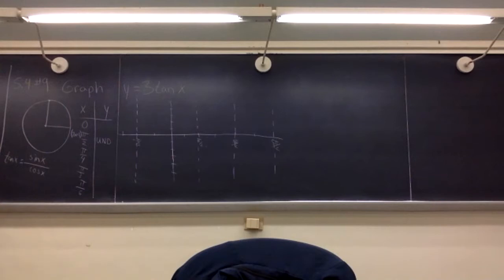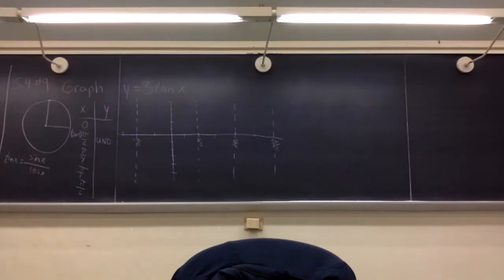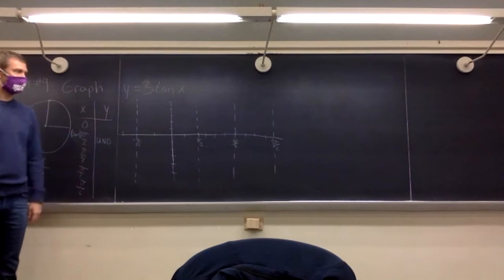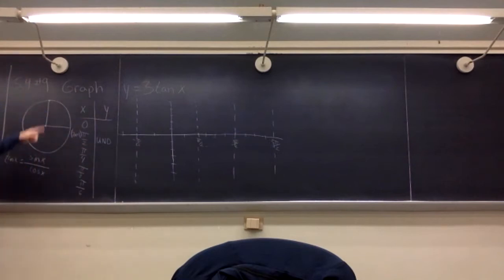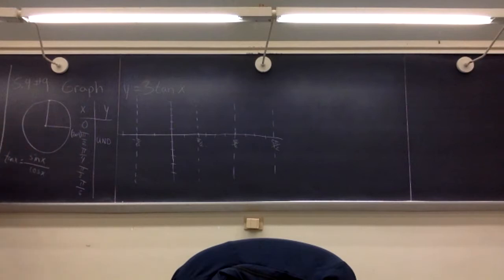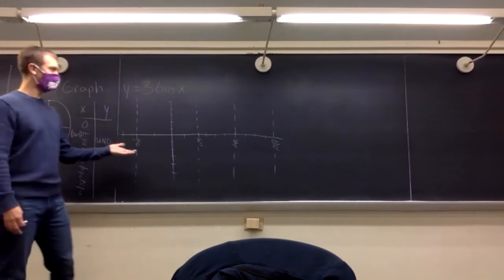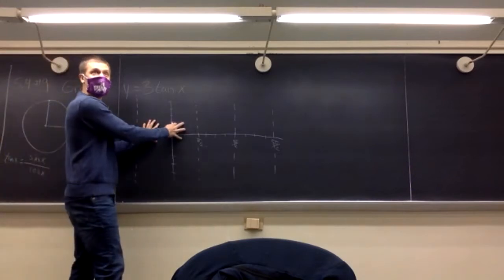One typical question when graphing trig functions is: what is the period? How frequently does this thing repeat itself? With tangent, the answer is every pi — it repeats itself every single half way around the circle. So once you've answered that, all you need to do is graph one period and remember it's going to repeat itself.